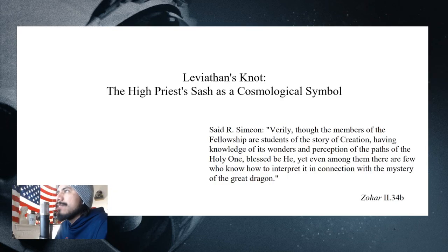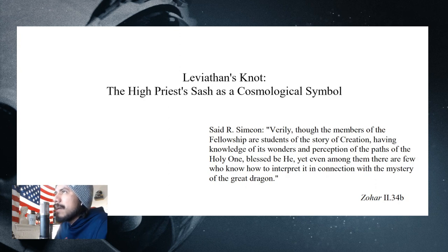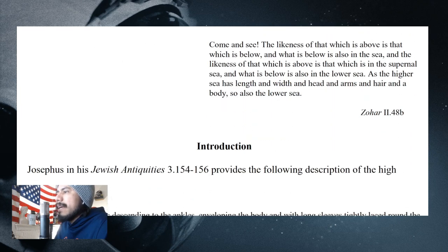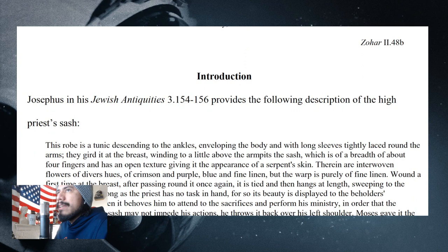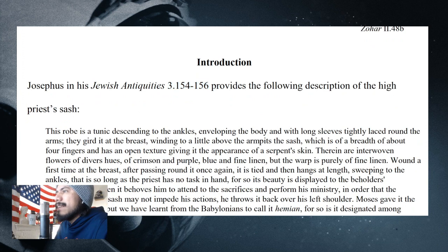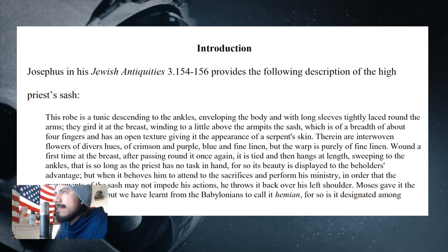I came across this really interesting article from Andrei Orlov, and the title is 'Leviathan's Knot: The High Priest's Sash as a Cosmological Symbol.' In Josephus, in his Jewish Antiquities, specifically 3.154-156, he gives an interesting description of the high priest's sash.